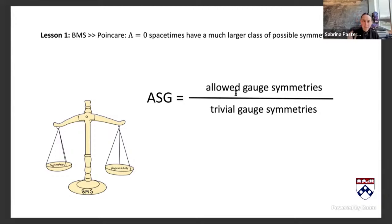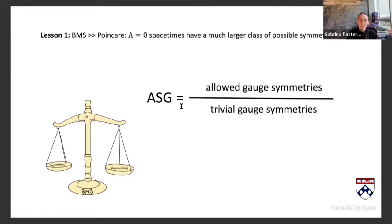That BMS group being much larger than Poincaré is where we think okay, this constraint on scattering might be very useful, and it leads us down this rabbit hole of the codimension-two description. We can always take a step back and compare it to the flat limit of AdS/CFT. When I say ASG here, I mean asymptotic symmetry group.